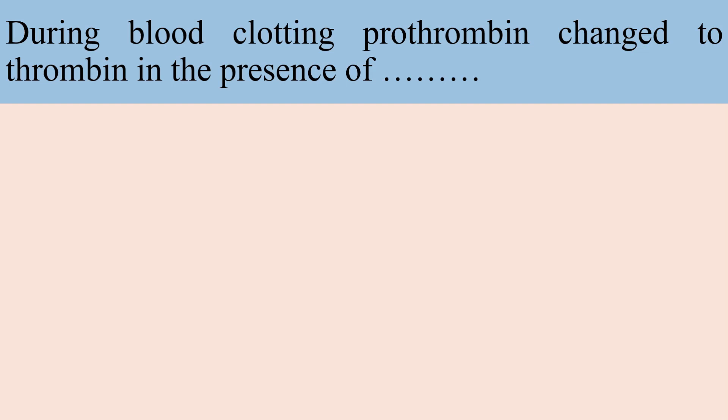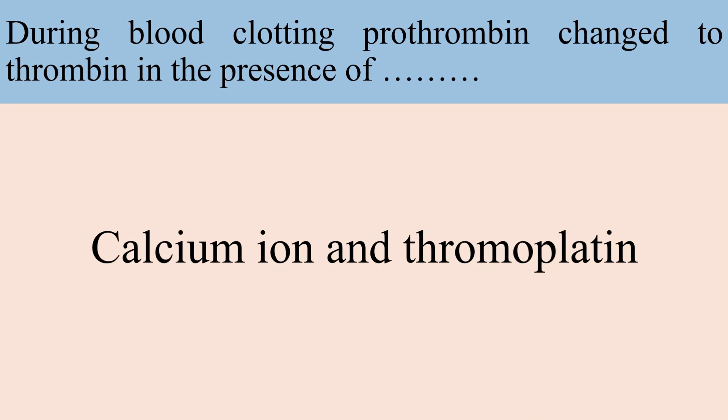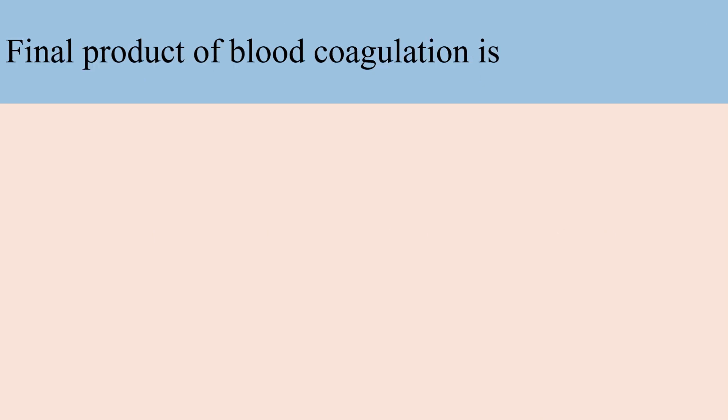During blood clotting, prothrombin is changed to thrombin in the presence of calcium ions and thromboplastin. The final product of blood coagulation is fibrin.